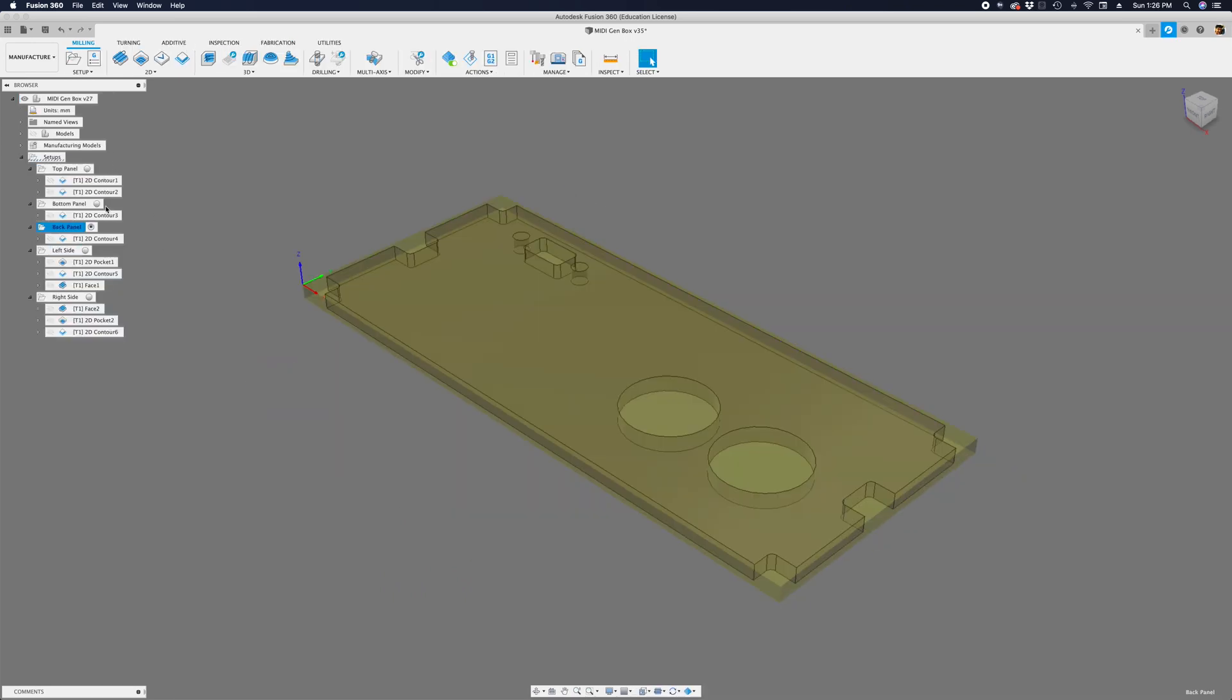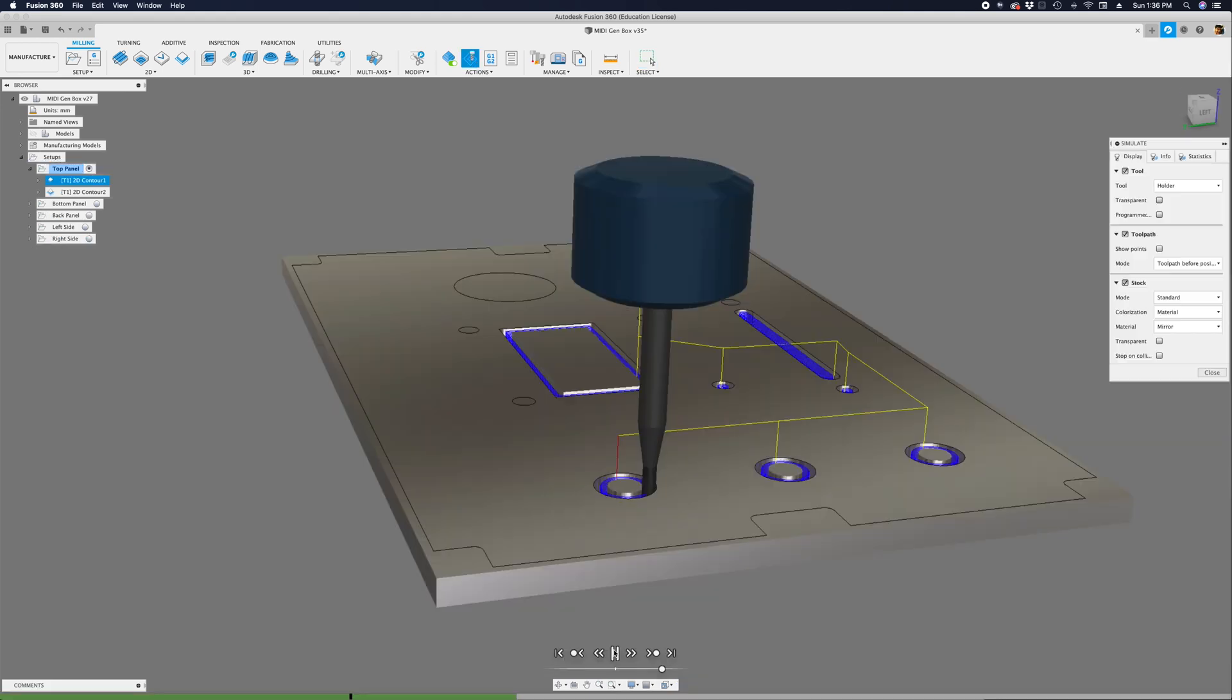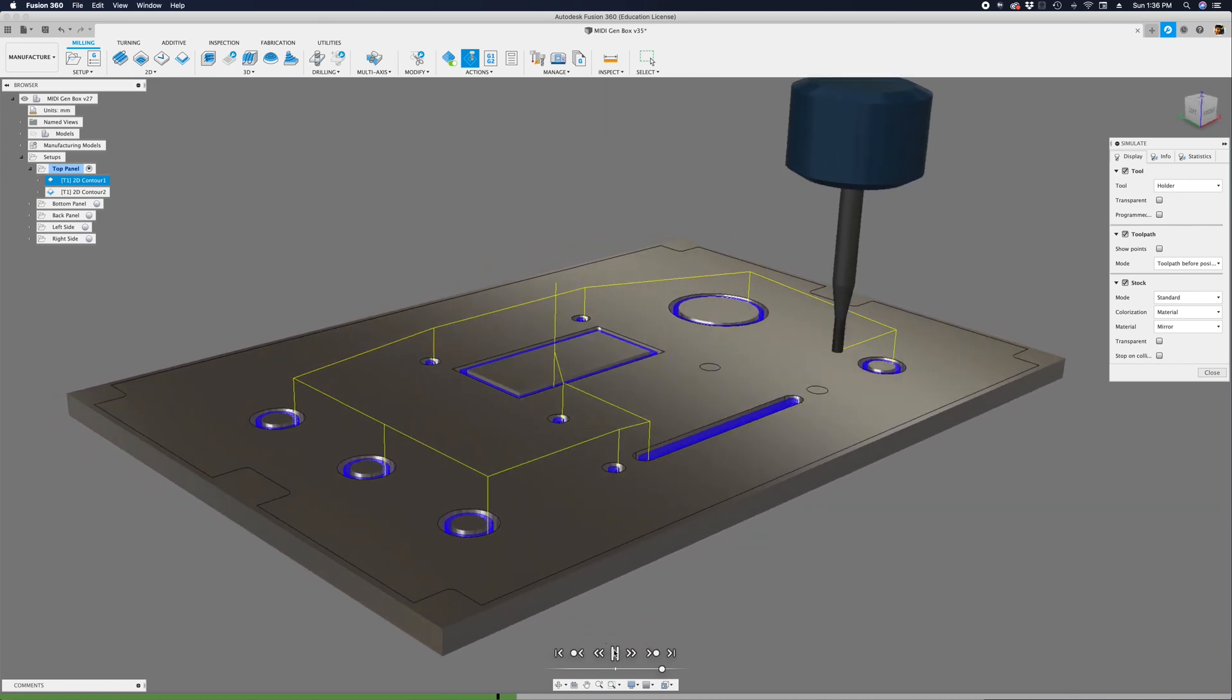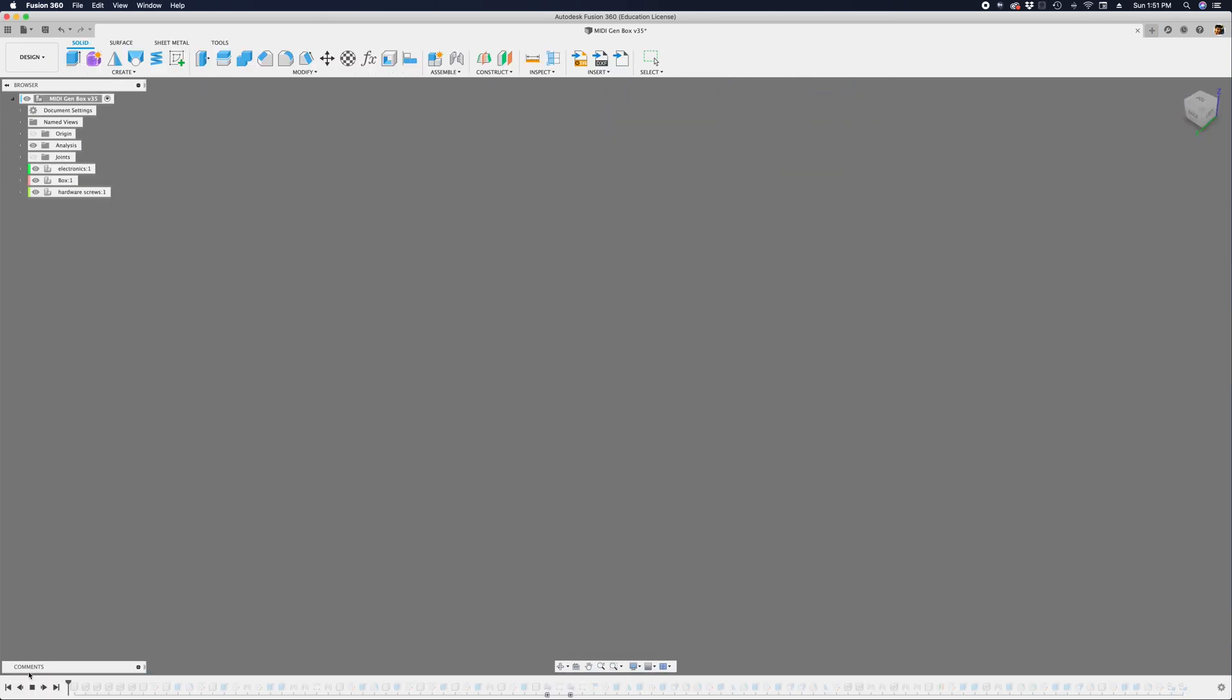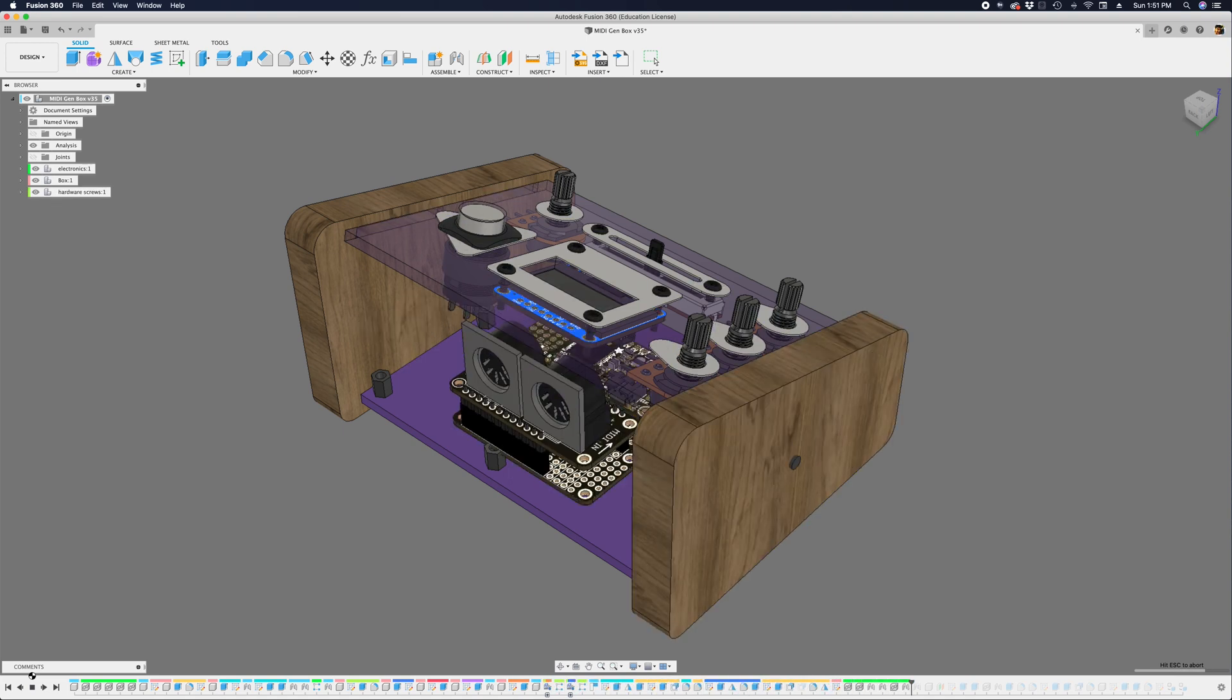Manufacturing models allow us to set up stock for each part so we can set up toolpaths for CNC milling. We only need two end mills to cut the pieces and use 2D contours and pockets to create the holes and outlines. 3D models of Adafruit parts are on GitHub, so please feel free to use them in your projects.